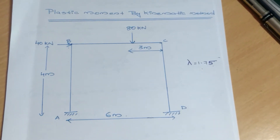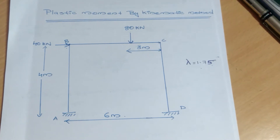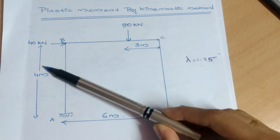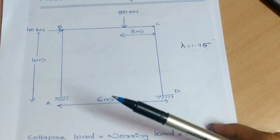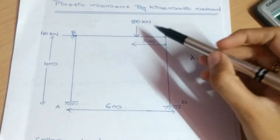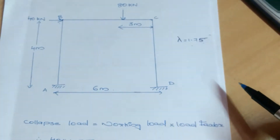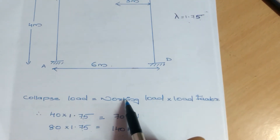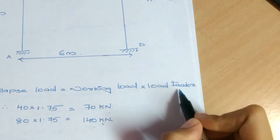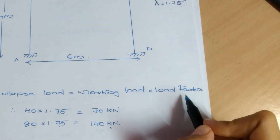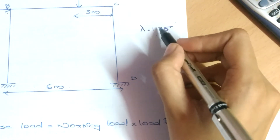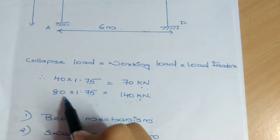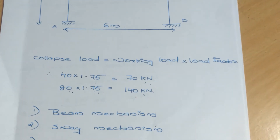Today we will be dealing with how we can find out the plastic moment by the kinematic method. We are provided with a frame of height 4 meters and length 6 meters. First we have to check whether the given loads — 80 kN and 40 kN — are collapse loads or working loads. Here the given loads are working loads, so we multiply by the load factor lambda equal to 1.75. Thus, 40 × 1.75 = 70 kN and 80 × 1.75 = 140 kN. These values will be used for further calculations.